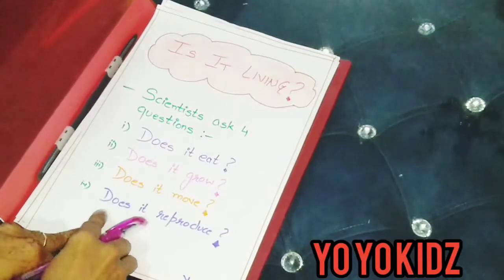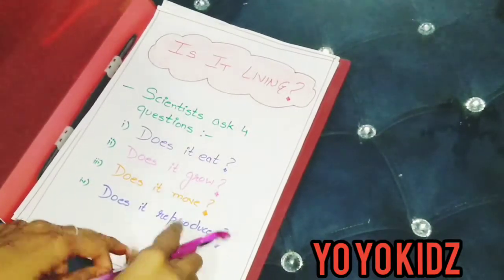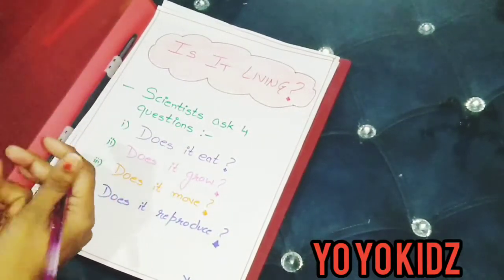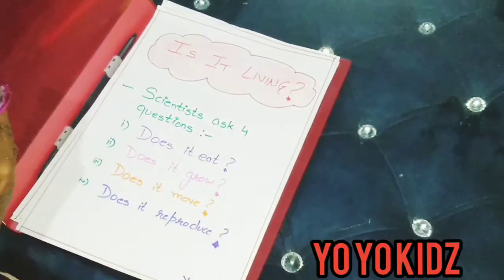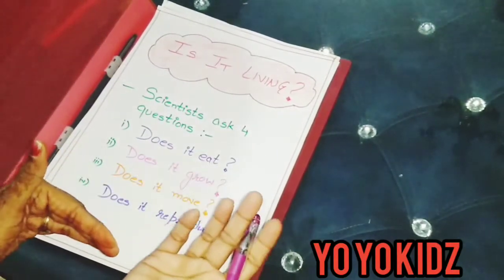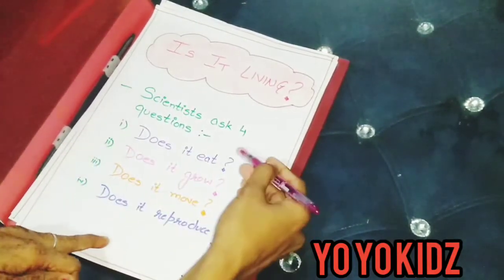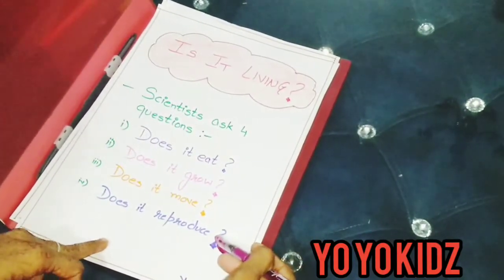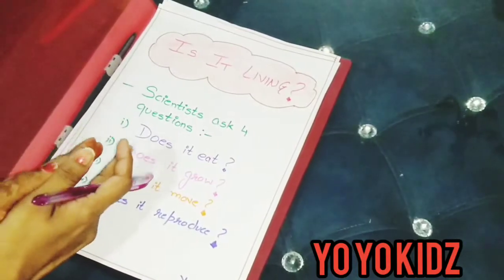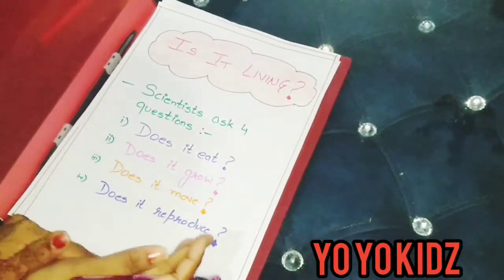And the last question is, does it reproduce? If it has babies, then it is a living thing. If it does not have babies, then it's a non-living thing. So on the basis of these characteristics, we categorize the things into living or non-living.